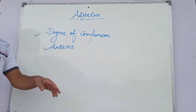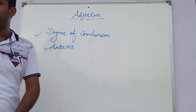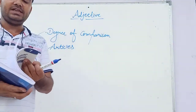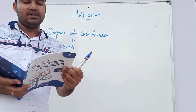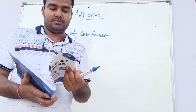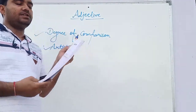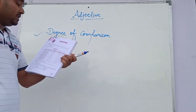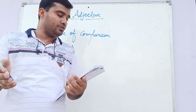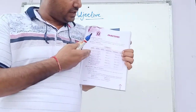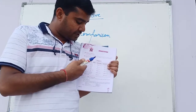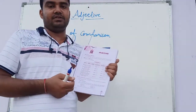Two things I told you: degree of comparison and articles. Our grammar book emphasizes more about adjectives. You need to take your book for better learning — side by side we will do exercises. This is chapter number three: adjectives. An adjective is defined as a word used to add something to the meaning of a noun. The kinds of adjectives are: adjective of quality, adjective of quantity, adjective of number, demonstrative adjective, interrogative adjective, and possessive adjective.